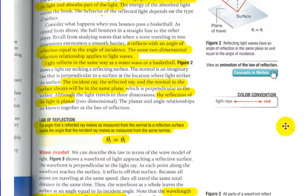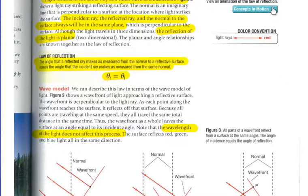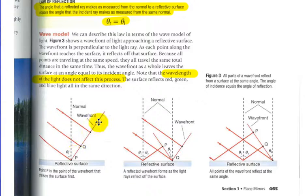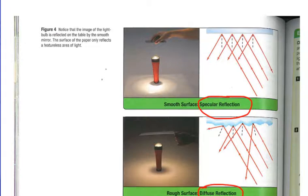And of course, the law of reflection, angle I equals angle R, or vice versa. The angle that reflected ray makes as measured from the normal to the reflective surface equals the angle that the incident ray makes as measured from the same normal. Okay? Going through that, and they just go through water waves here. And note, of course, that we looked at the wavelength does not change when it undergoes reflection. We have to change the medium itself to change that.